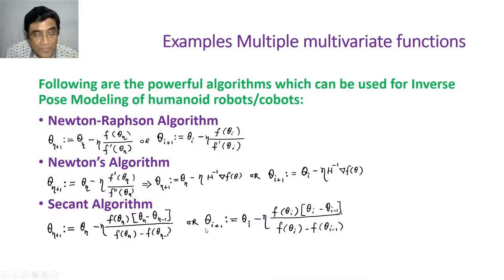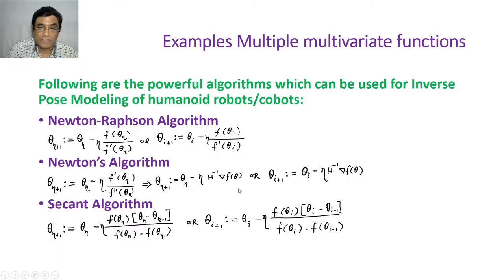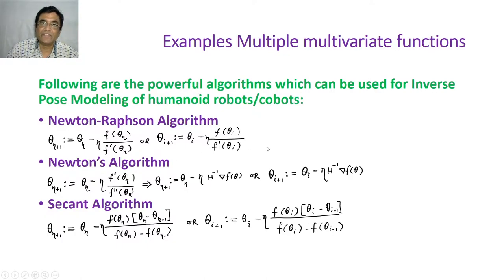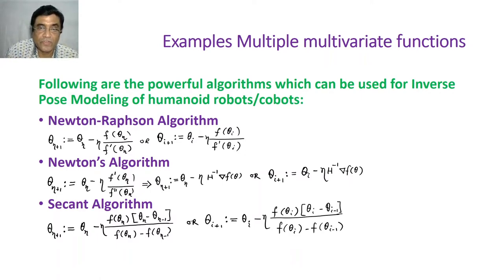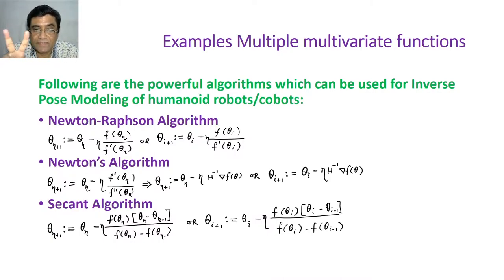Another very interesting and important algorithm you have learned is the Secant algorithm. Here you do not require to calculate any gradient, so computationally it will be much more efficient compared to the other two. But there is no free lunch — here you need two initial guesses. Newton-Raphson and Newton's algorithm will converge if your initial guess is near to the root you are trying to find. For the Secant algorithm, you require two guesses, and those guesses have to be chosen very carefully. The benefit is that at those guess points, you are only calculating the function value, and from that you are able to calculate delta theta.